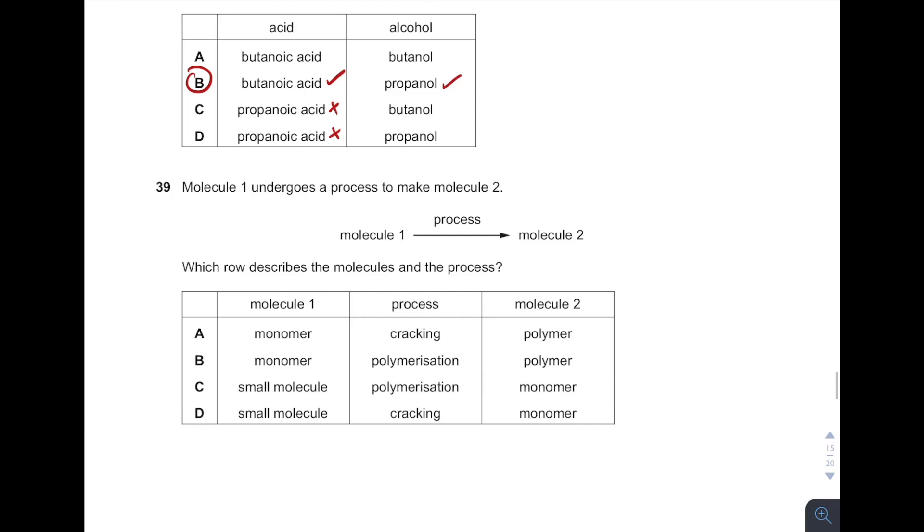39. Which row can describe the process? Molecule 1 to molecule 2, what's the process called? The most suitable one is B. From monomers to polymers, it's called polymerization. What is cracking? Cracking means the breaking of a large molecule into smaller molecules.